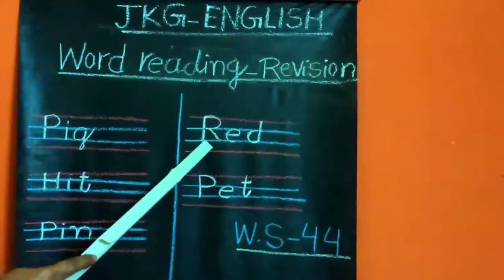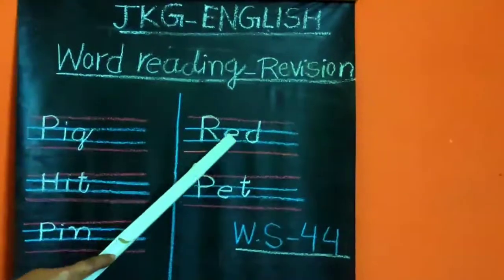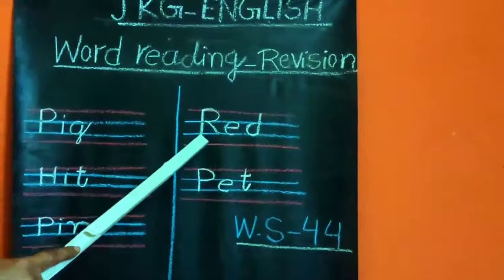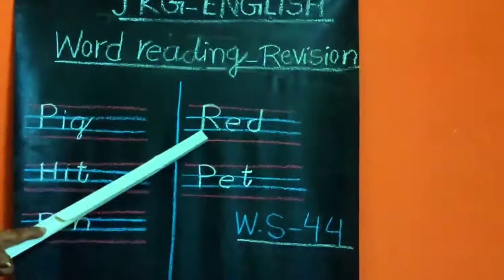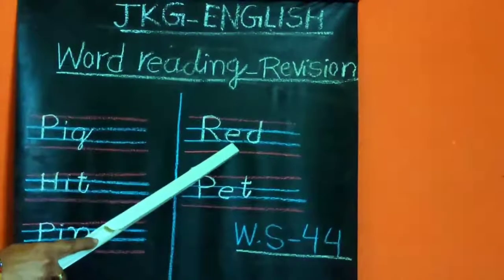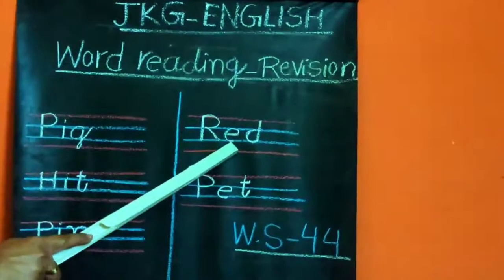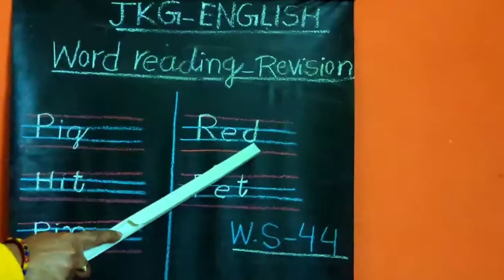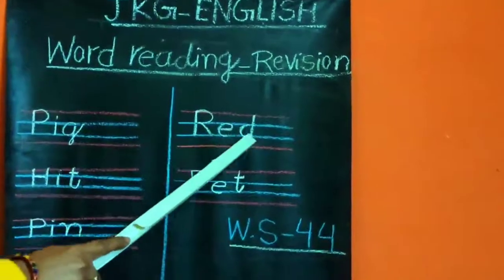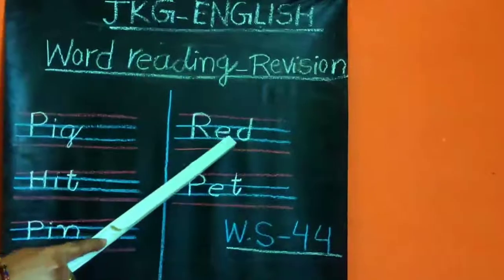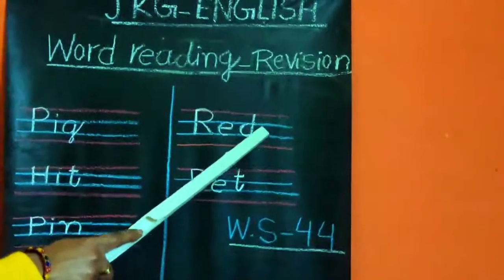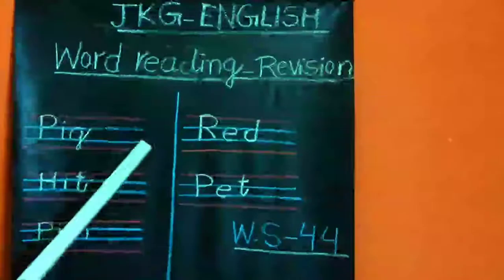Now look here. Here I have written 'red'. How we will read this? The beginning sound of this letter is 'r', the middle sound is 'e', and the end sound is 'da'. So how we will read this letter? R, e, da — red. Red is a color.